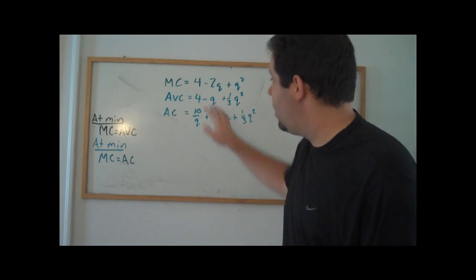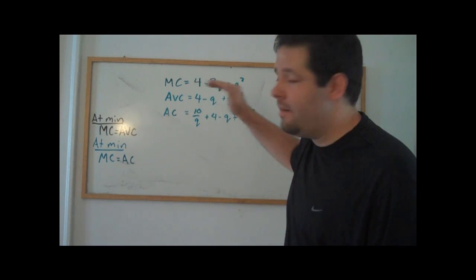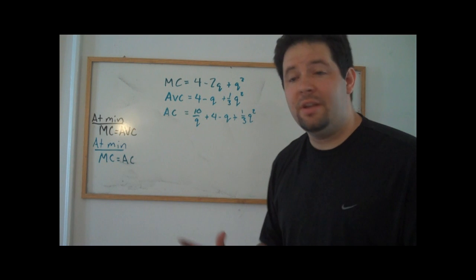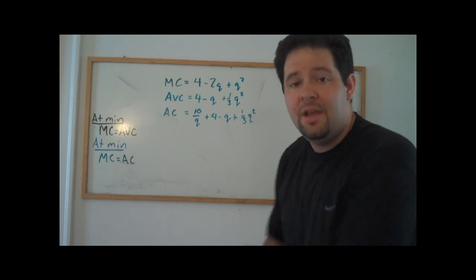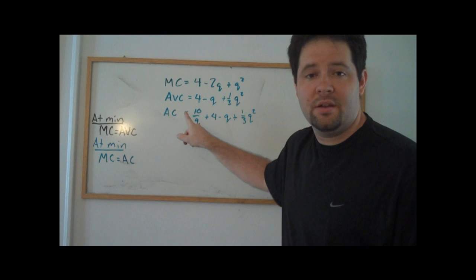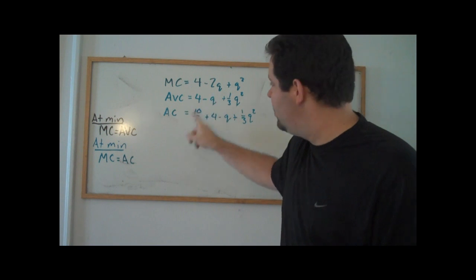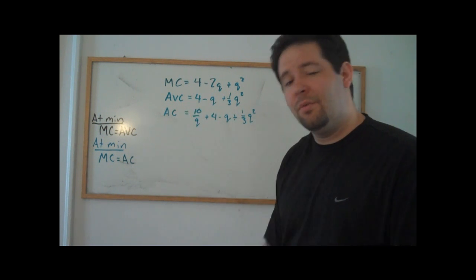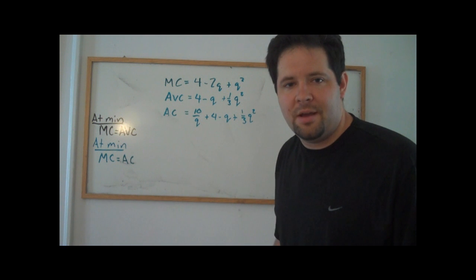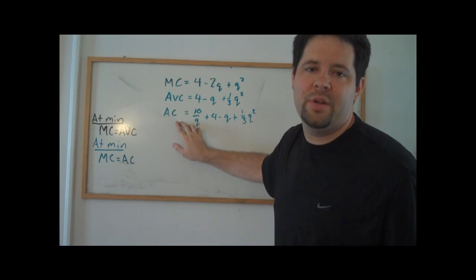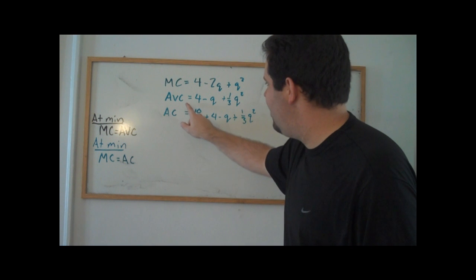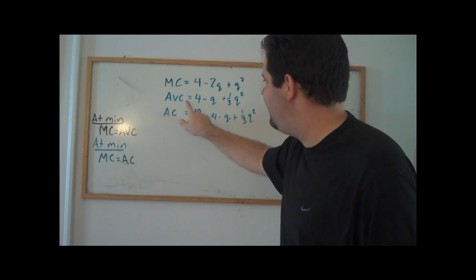Here are some formulas for marginal cost, average variable cost, and average cost. We can use just this information to figure out where the minimum of the average variable cost curve is and where the minimum of the average cost curve is. Remember, we're interested in these because the AVC minimum is the shutdown point and the AC minimum is the exit point.